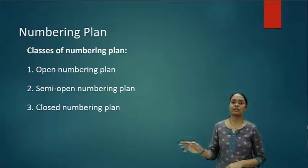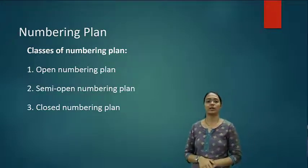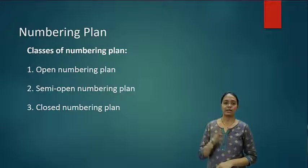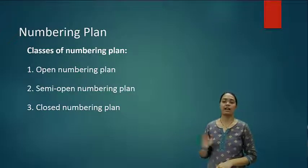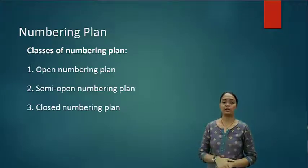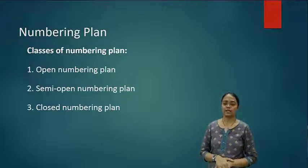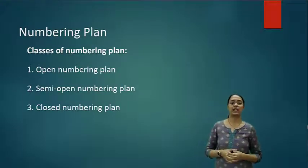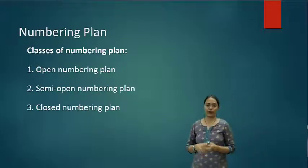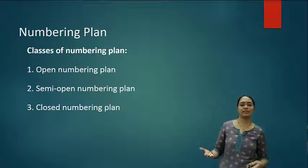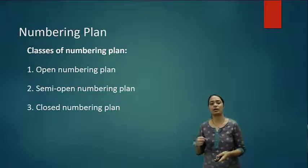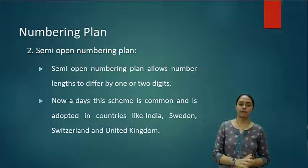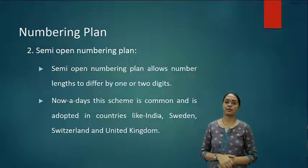The second one is semi-open numbering plan and the third one is closed numbering plan. Most probably this will be the last session for unit number 4 — telephone networks — and after this we will be shifting to unit number 5, data networks. In this numbering plan we discussed that it identifies the user's identity or information from which place the user is calling. We already discussed the open numbering plan, so now let's understand what is semi-open numbering plan.